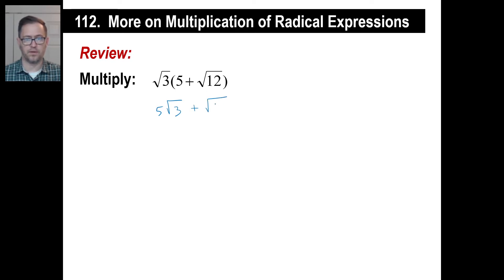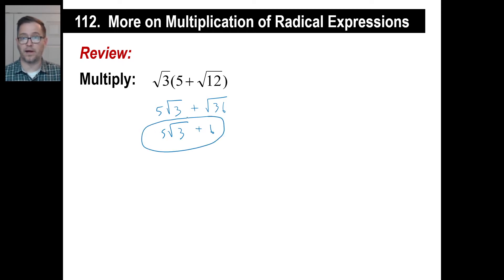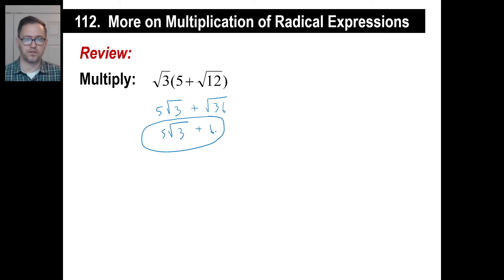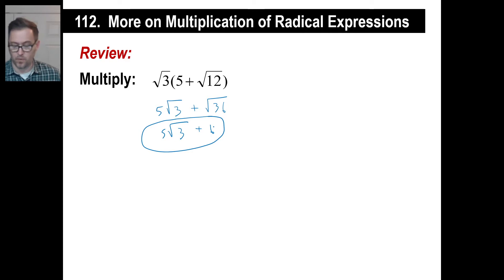The square root of 3 times the square root of 12 is the square root of 36. And then 5 square root of 3, and the square root of 36 is just 6, so we stop right there. They're not like terms; there's nothing you can do with that. Of course, remember, if this was 6 square root of 3, we could do 5 square root of 3 plus 6 square root of 3 equals 11 square root of 3.